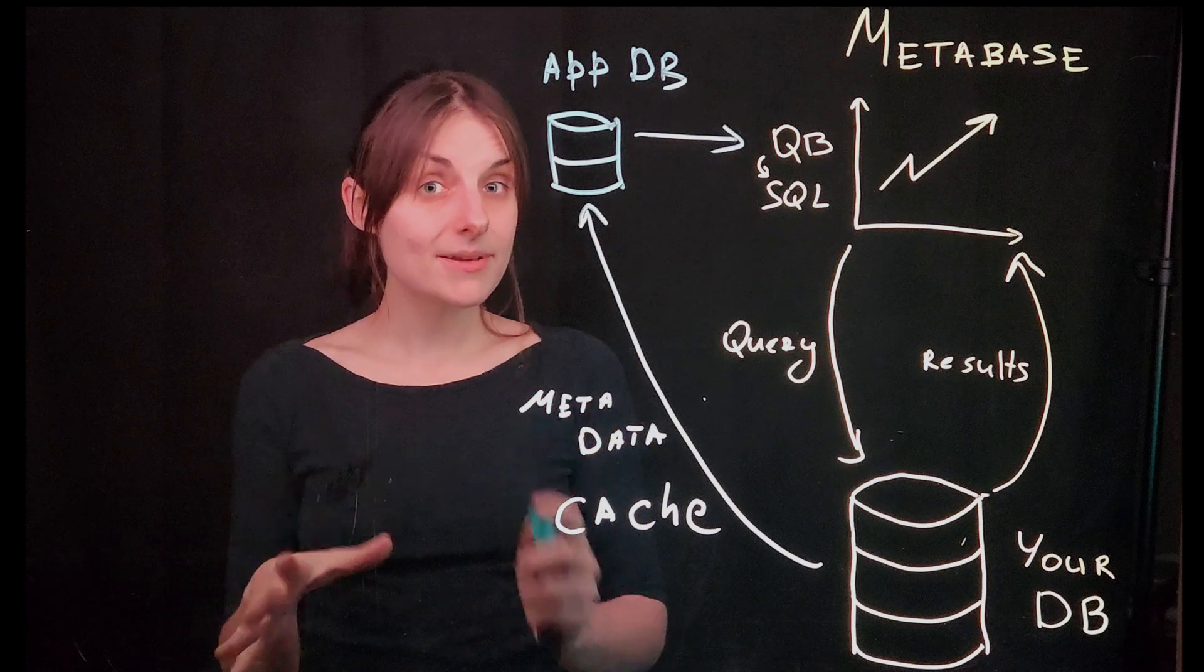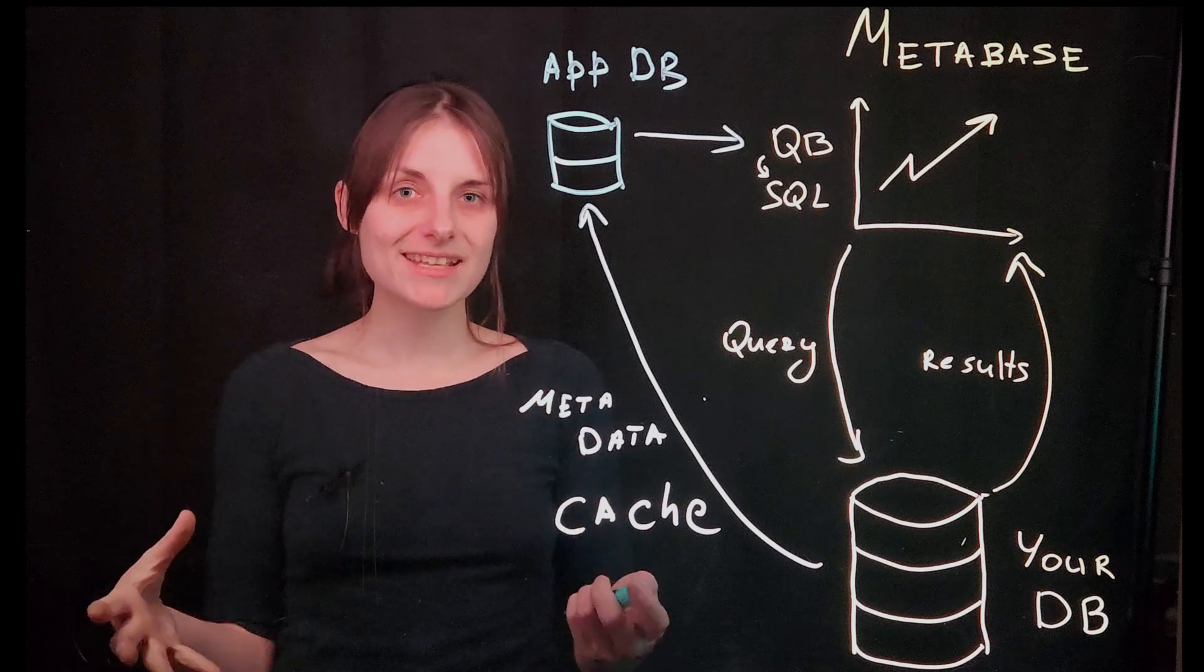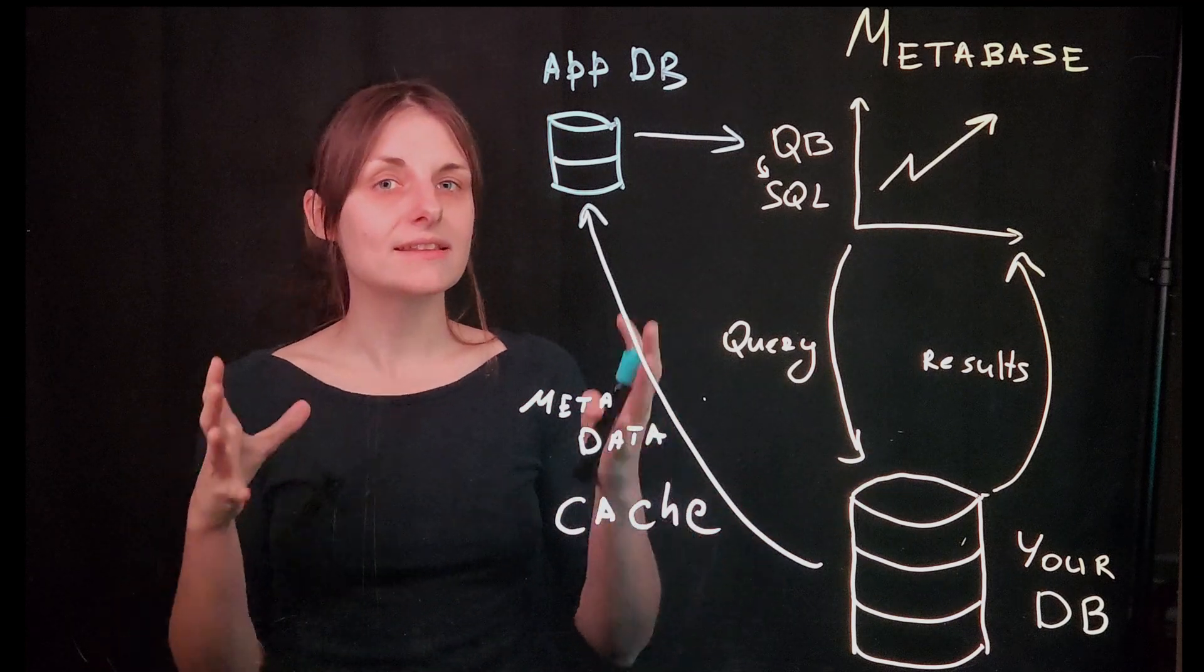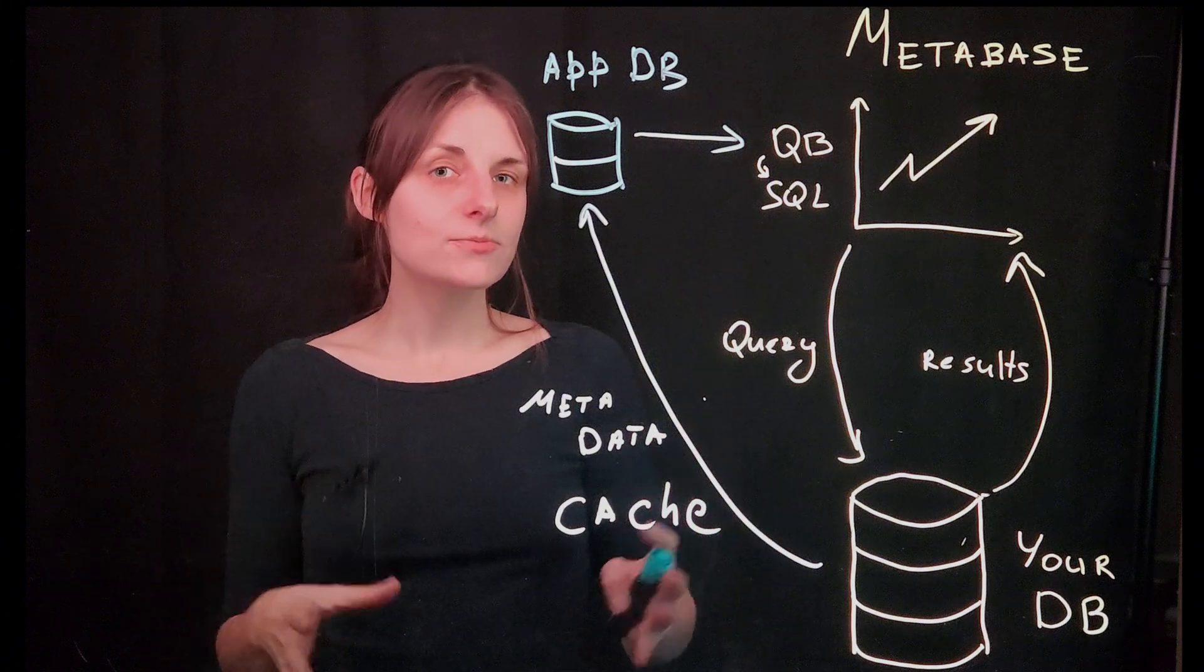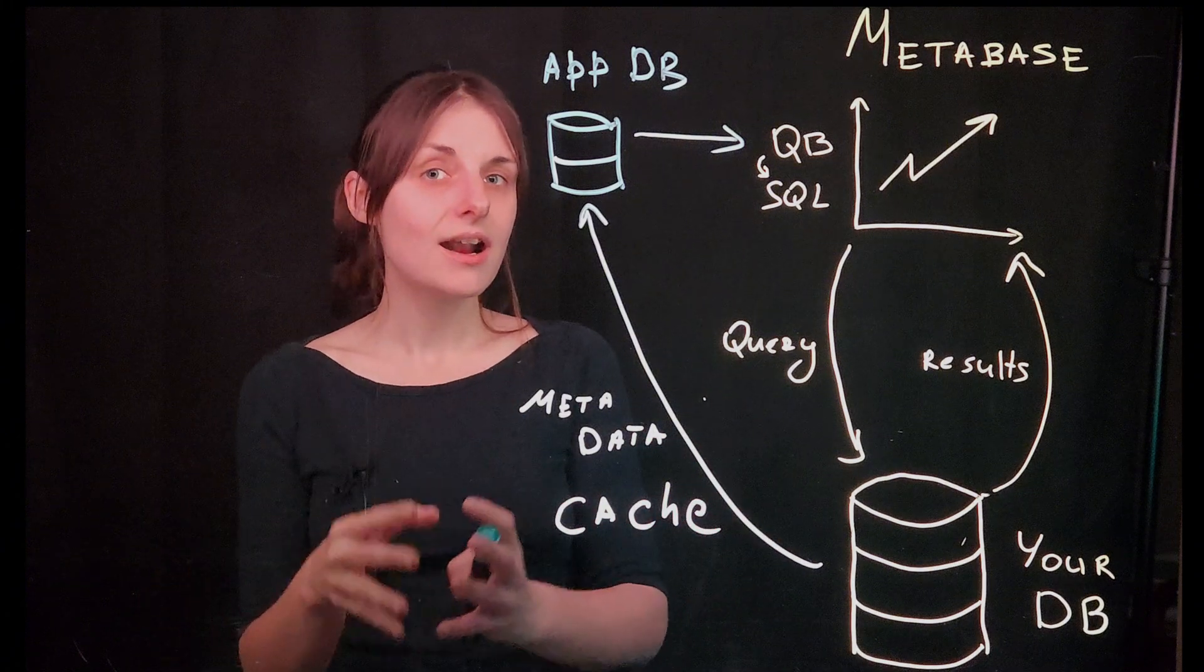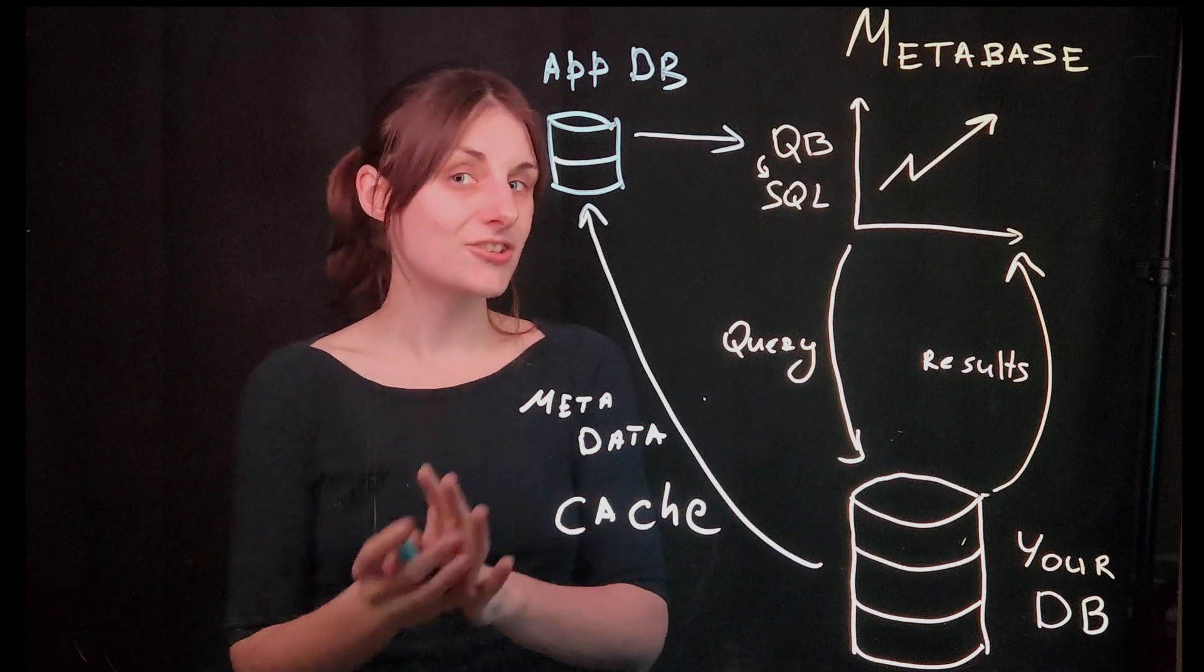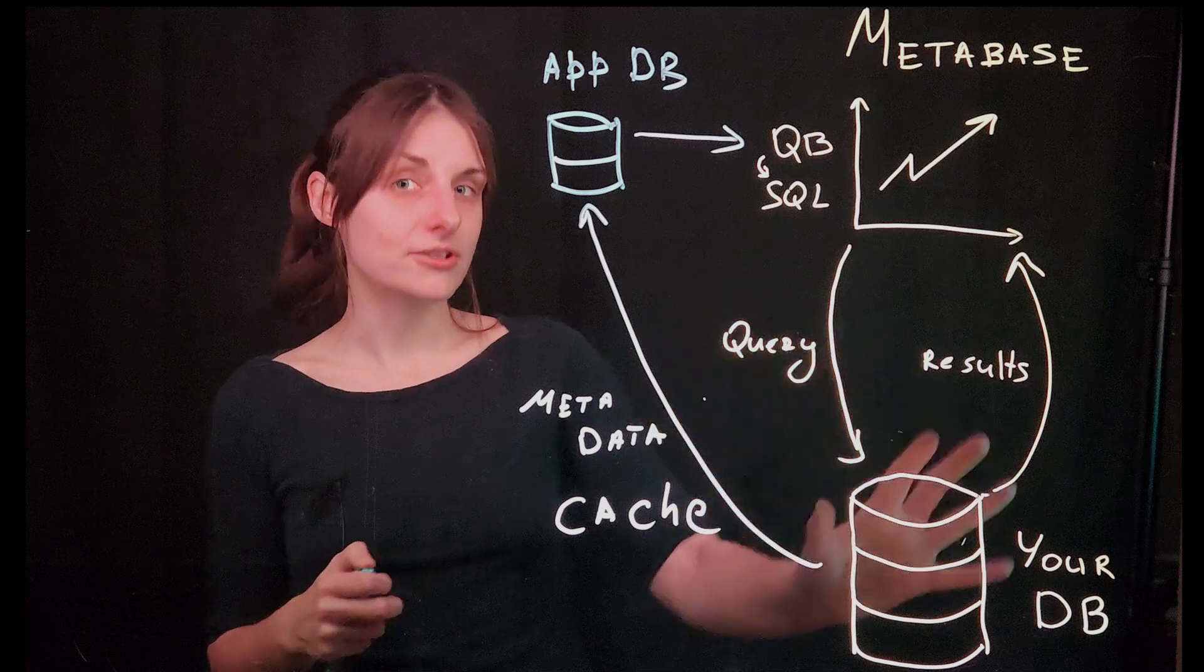Now Metabase only caches the query results. So for example, if your query is computing the number of customers in this quarter, then Metabase will cache only this number and not the data about the customers that goes into computing this number. Your data always stays in your database.